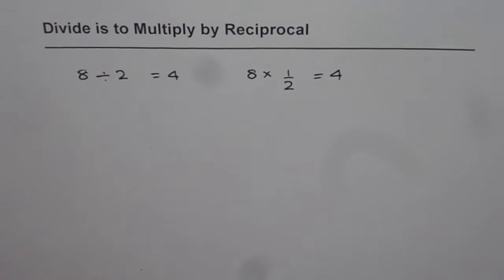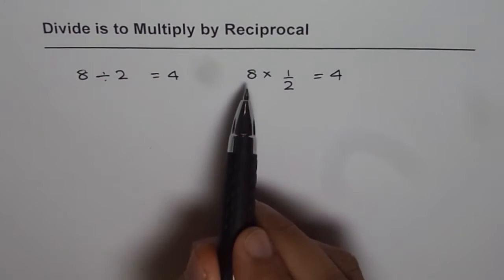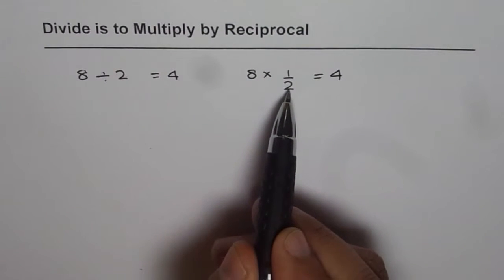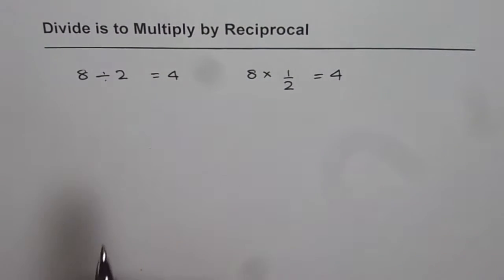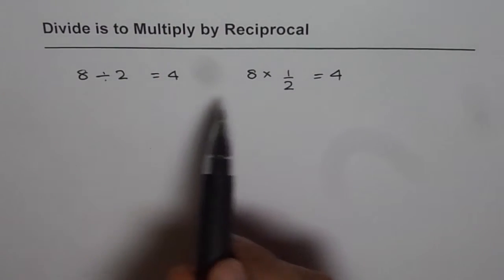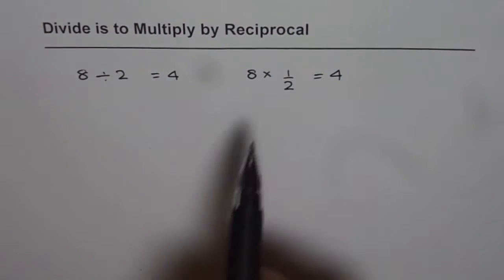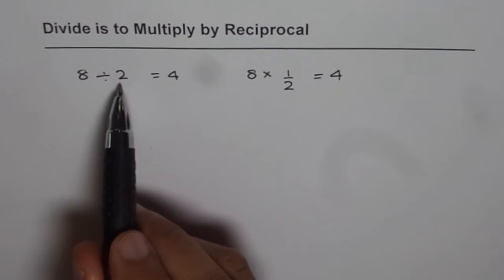Now you can see here, 8 divided by 2 is 4 and 8 multiplied by half is also equal to 4. How are 2 and half related? Half is reciprocal of 2.